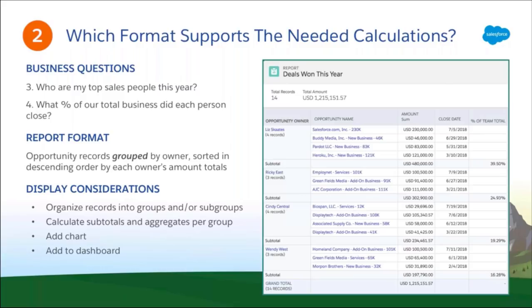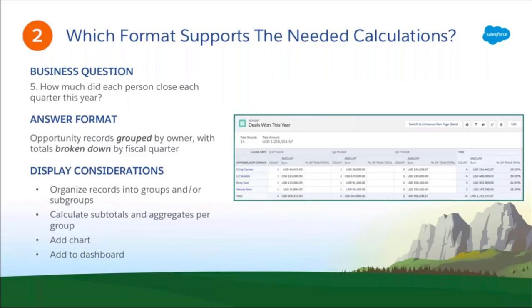This format, grouping by rows, answers those two additional questions. If you're used to Classic, you'd recognize this as a summary report — we're summarizing deals by owner, but in Lightning we simply grouped the rows. For the final question — how much did each person close each quarter this year — we also need to break it down by quarter, which means introducing column groupings. This brings us to a matrix report format, which can also be used for dashboard charts and supports subtotals on both the row and column groupings.